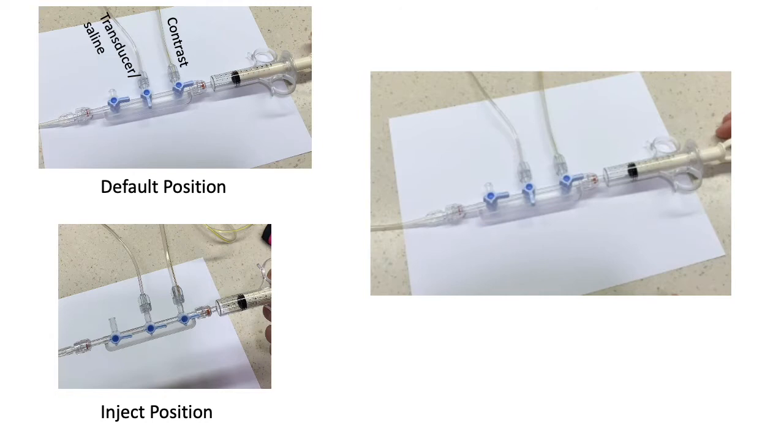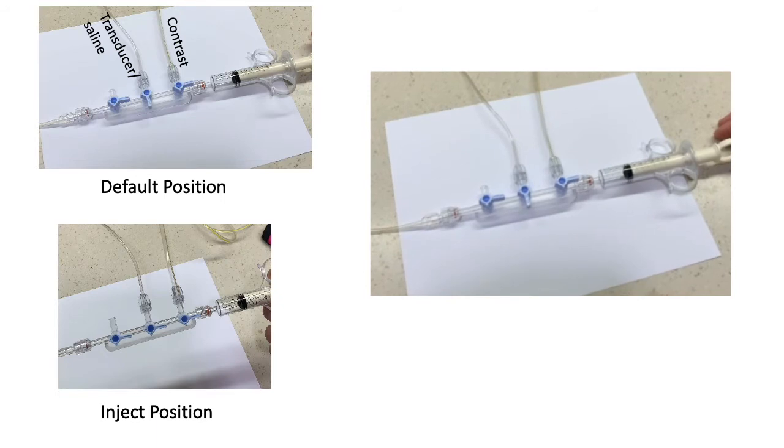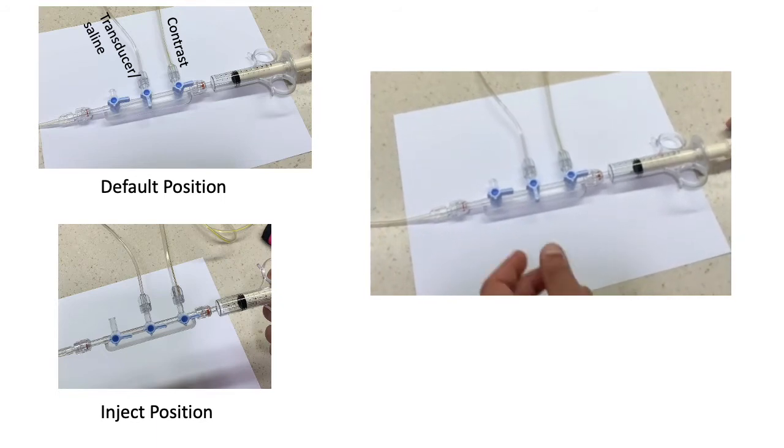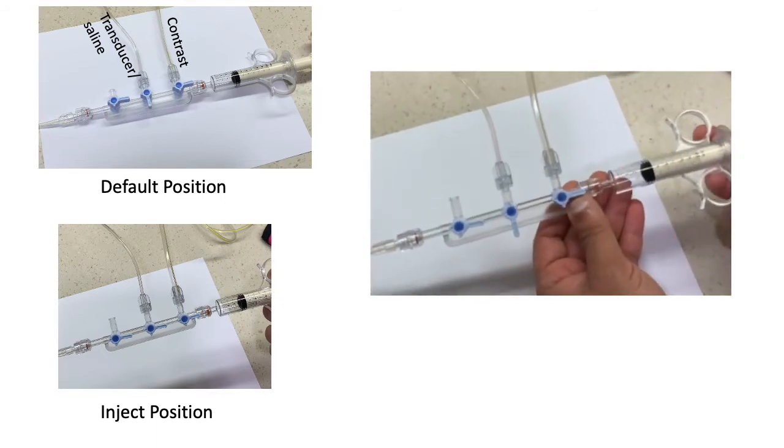The top left is the default position with the middle valve pointing down. This default position allows us to measure pressures.